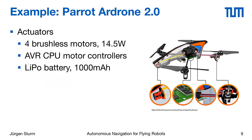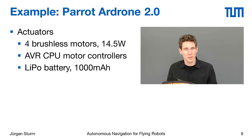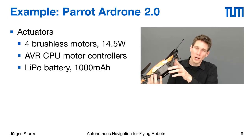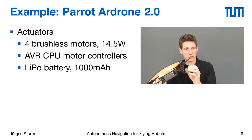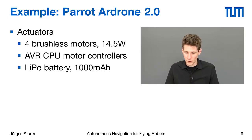This brings us to our first and most important platform. We will use the Parrot AR Drone as the example model throughout this course, and if you have one you can run all the exercises on it. It consists of four brushless motors with a nominal power consumption of 14.5 watts each, so the overall quadrotor draws around 60 to 80 watts. Every motor has its own motor controller with a small CPU, and there is a lithium polymer battery that powers the quadrotor for 10 to 15 minutes.